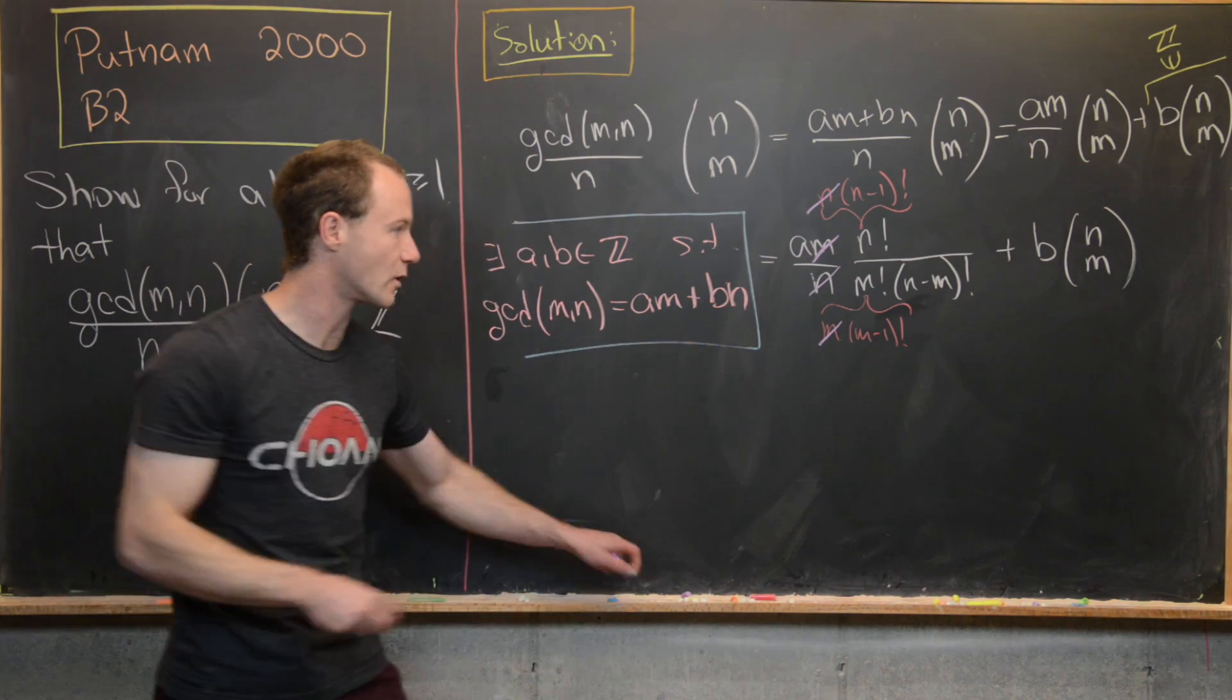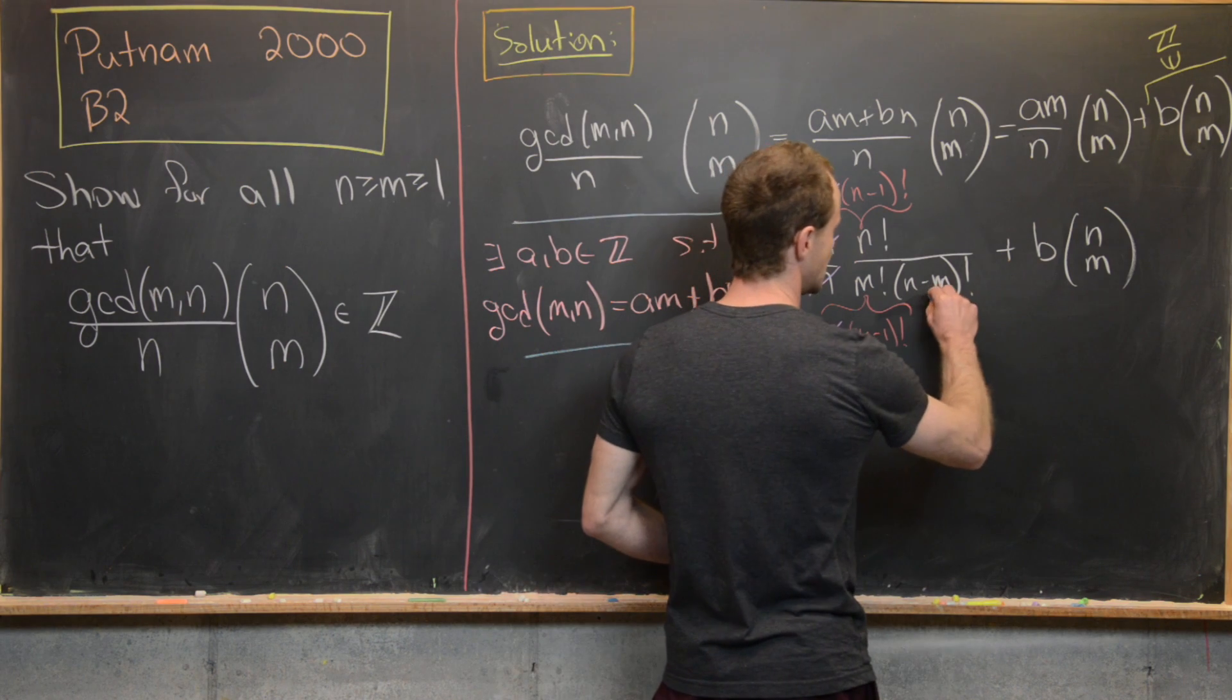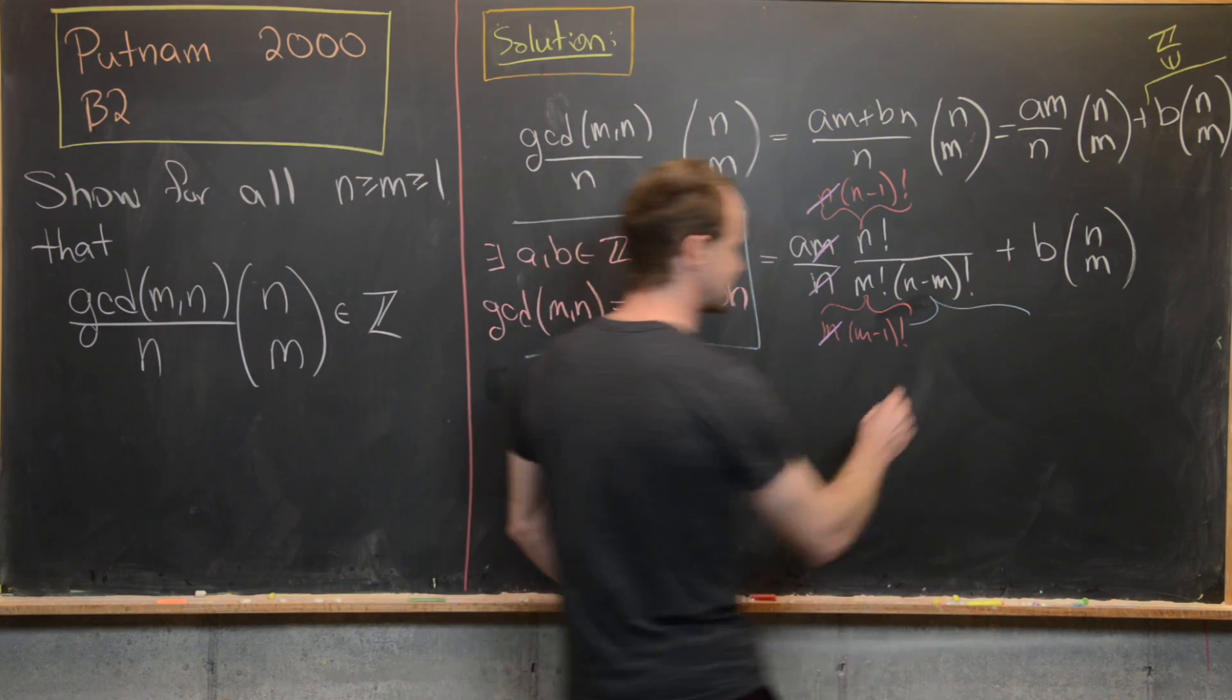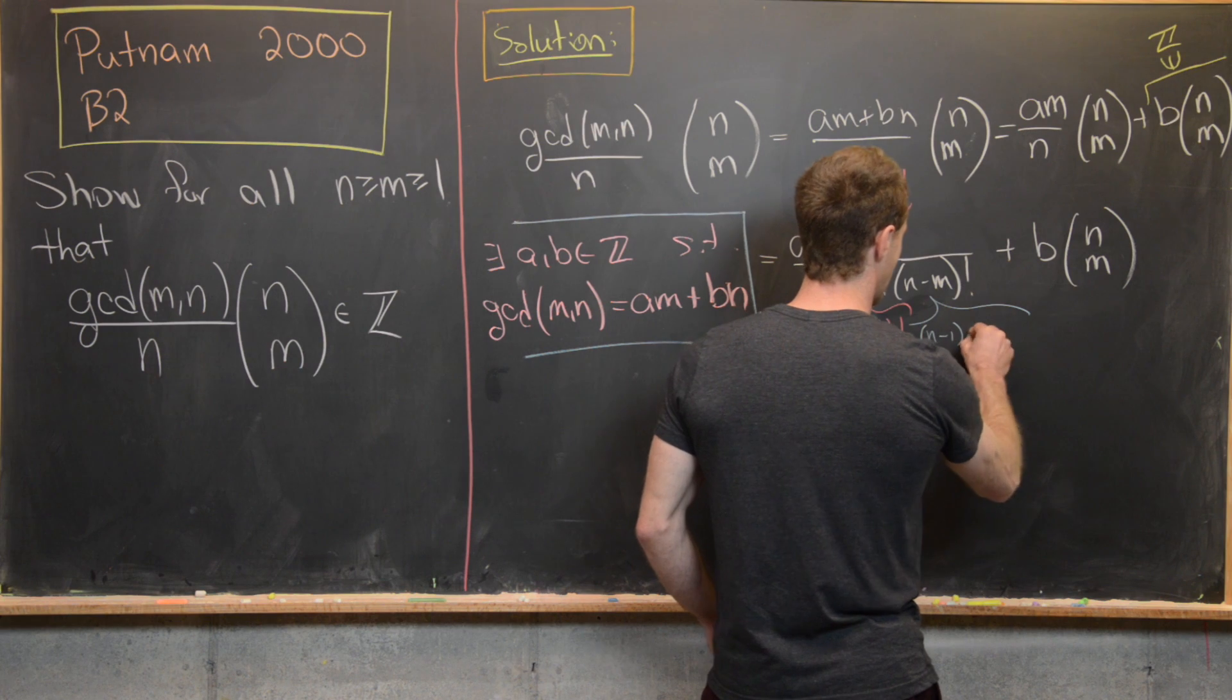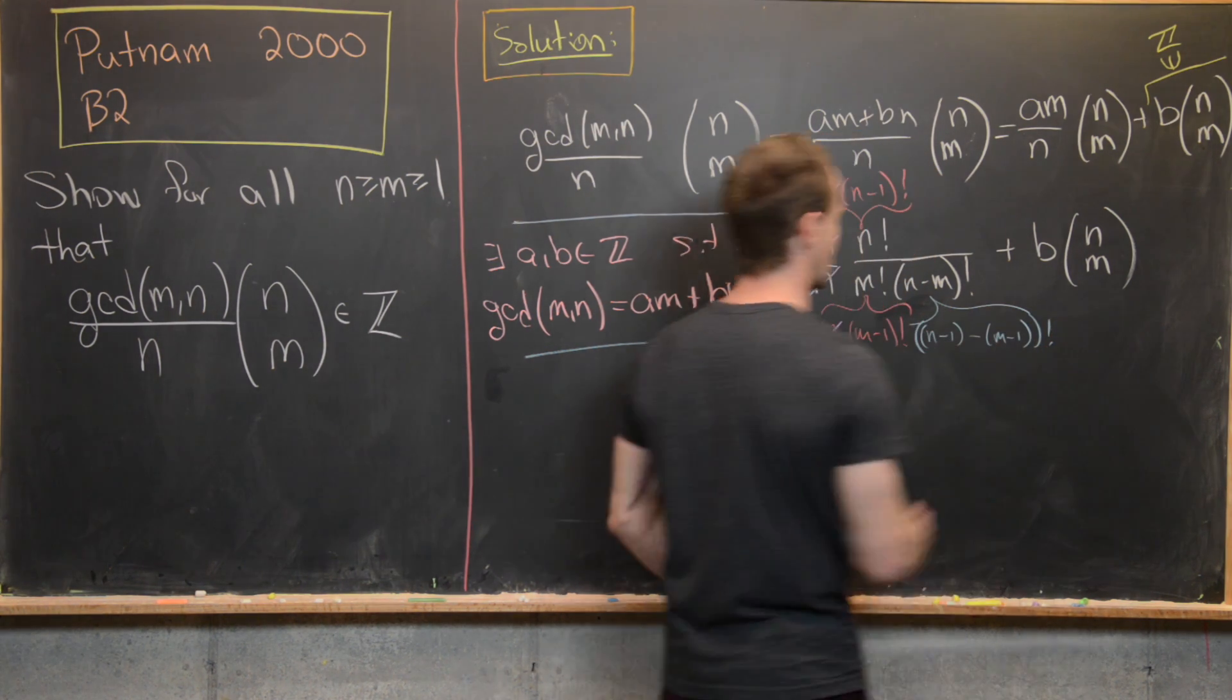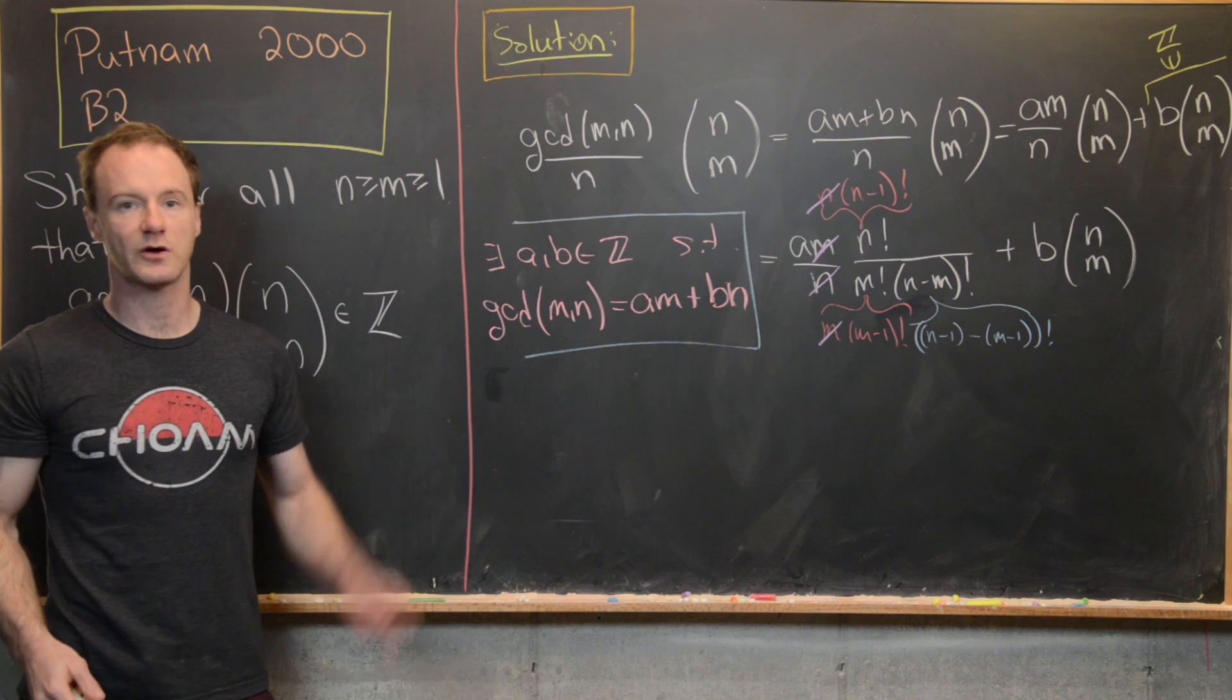And then we want to do one more thing. And that is we'll rewrite (n-m) as (n-1) - (m-1). So notice I've really just added and subtracted 1 there.